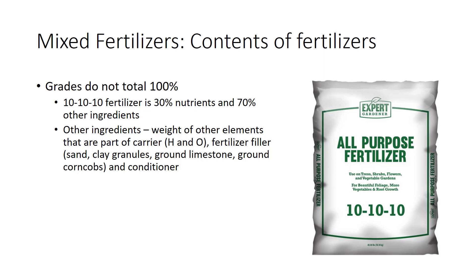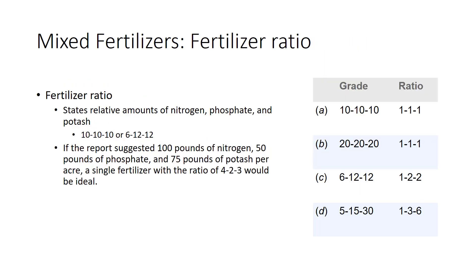Conditioners improve the quality of the fertilizer and make it easier to use. Fertilizer ratio states the relative amounts of nitrogen, phosphate, and potash in fertilizers. Ratios are useful when comparing two fertilizers, as shown in the following examples. Note that fertilizers A and B may have the same ratio, meaning that one fertilizer can be used in place of the other. Applying 1 ton of 10-10-10 is the same as applying a half ton of 20-20-20.